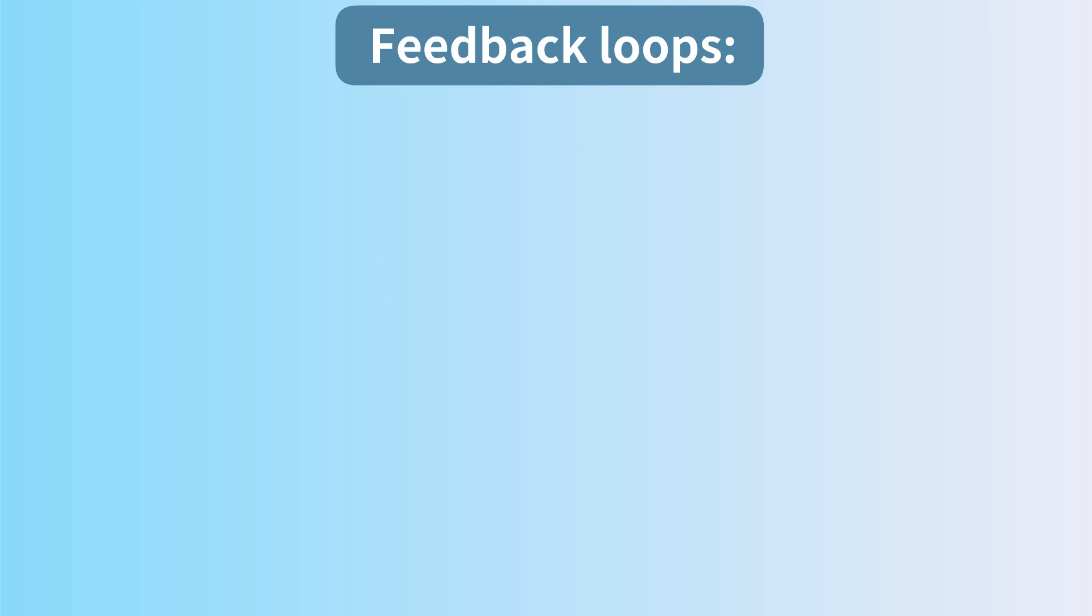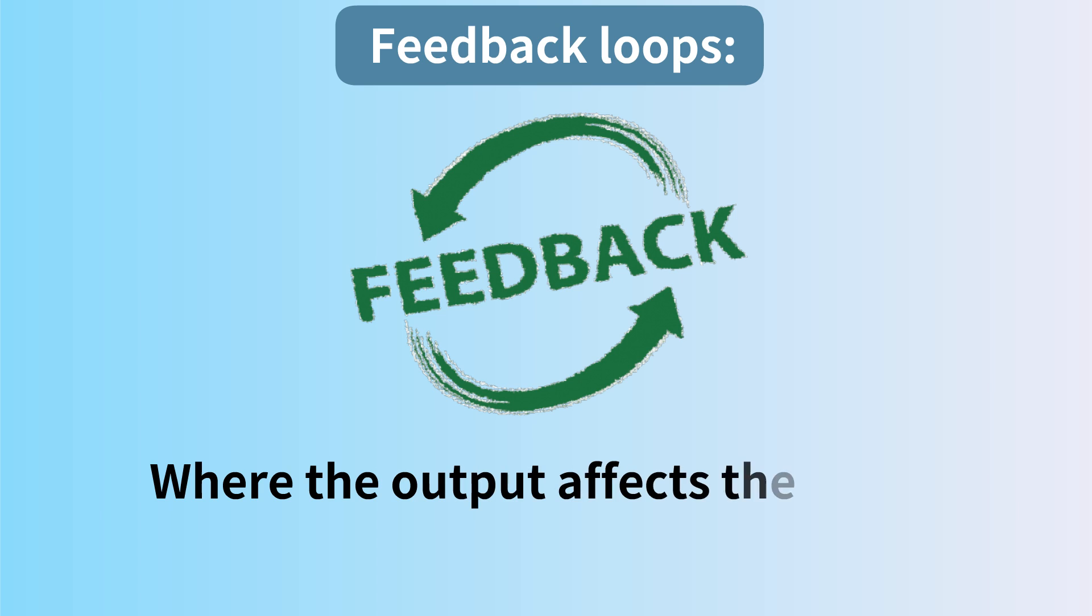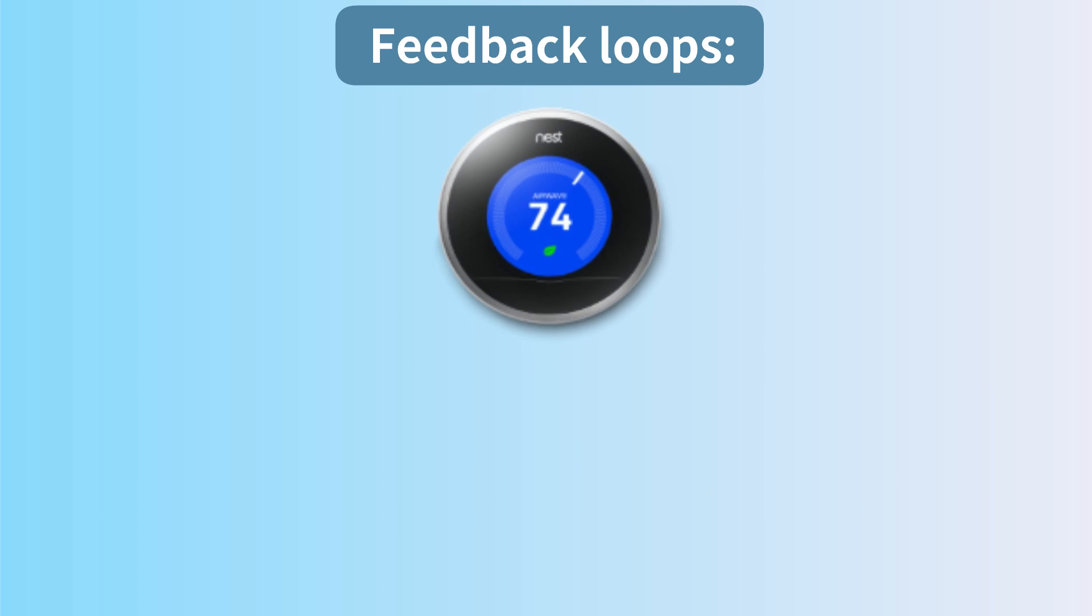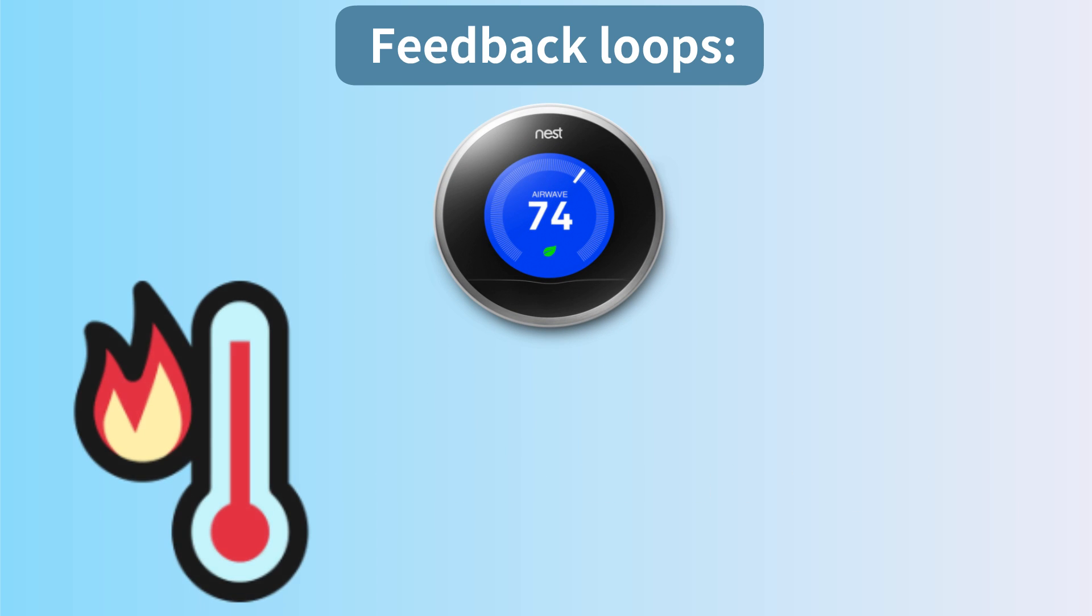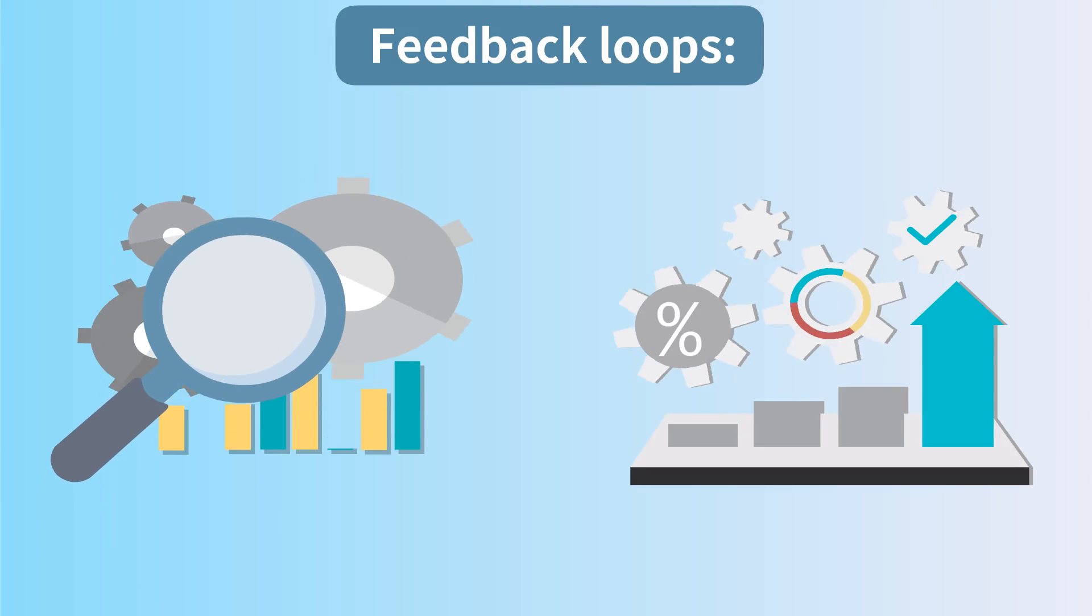Feedback loops: Many systems have feedback loops where the output affects the input. In a thermostat, for instance, when the room gets too hot it turns off the heat. System analysis helps us identify and optimize these feedback mechanisms.